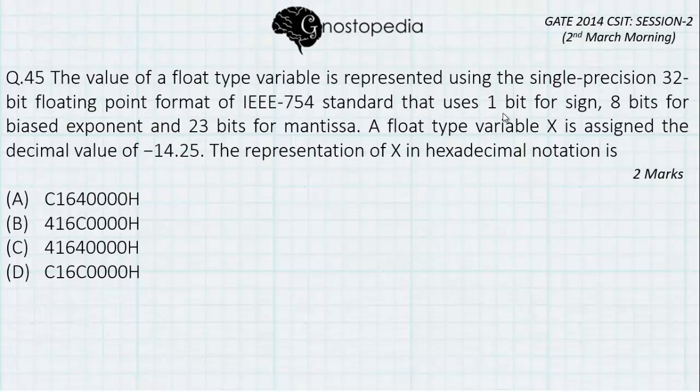The value of a float type variable is represented using the single precision 32-bit floating point format of IEEE 754 standard that uses 1 bit for sign, 8 bits for biased exponent, and 23 bits for mantissa.